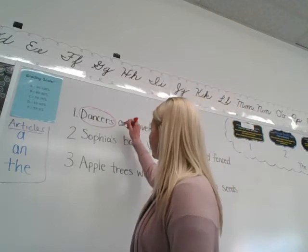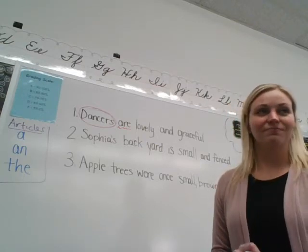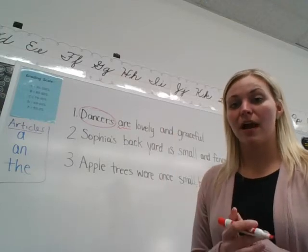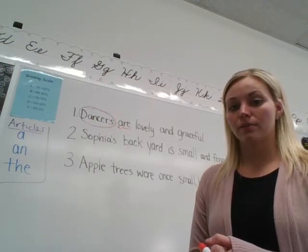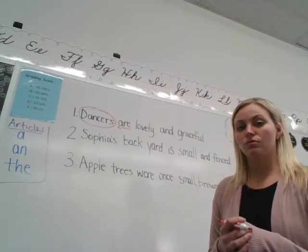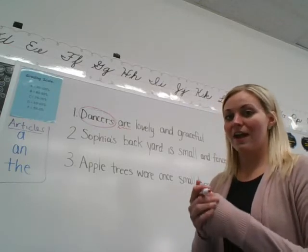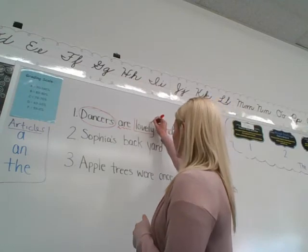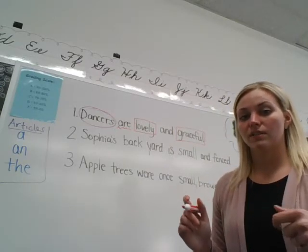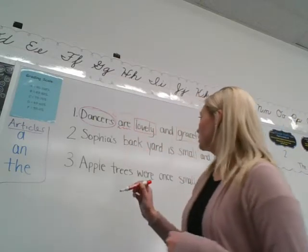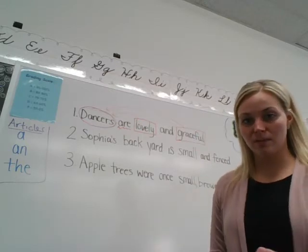Now go ahead and make a box around your adjectives. Remember, adjectives describe the nouns. What words describe the nouns in our sentence? Pause me if you need to find them. You should have found that 'lovely' and 'graceful' are our adjectives. We have to figure out what noun they're describing. 'Lovely' is describing the dancers, and 'graceful' is also describing the dancers — they are lovely and graceful dancers.